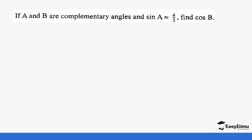If a and b are complementary angles and sine a equals 4 over 5, we need to find cos b. We are already given sine a equals 4 over 5. Since a and b are complementary, a plus b totals 90 degrees. Looking at the right-angle triangle, sine a is the opposite side 4 over the hypotenuse 5.